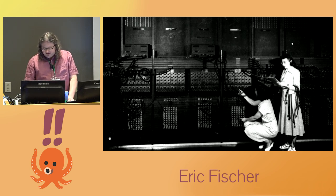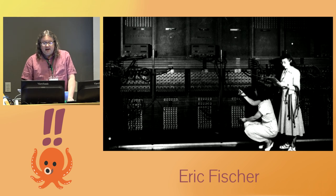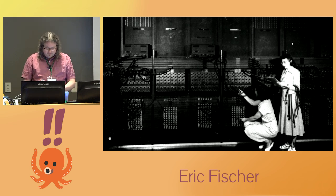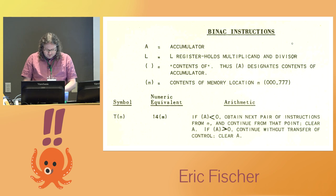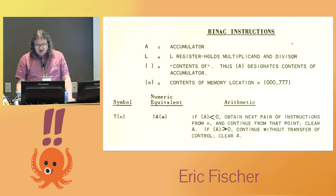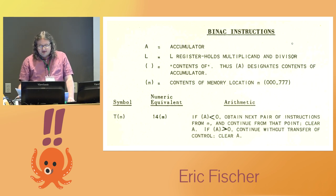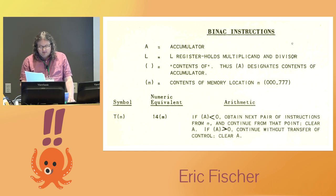Soon, computers began to have enough memory that programs could be stored in memory rather than wired together. Instead of a physical sequence of instructions, there was a numerical sequence, and a few special instructions could cause the computer to jump to a different point in the sequence. Here, for example, is the conditional jump instruction from one of the first commercially produced computers in 1949. It checked whether the last number calculated was negative, and if so, it diverted the flow of control to some specified location in memory.